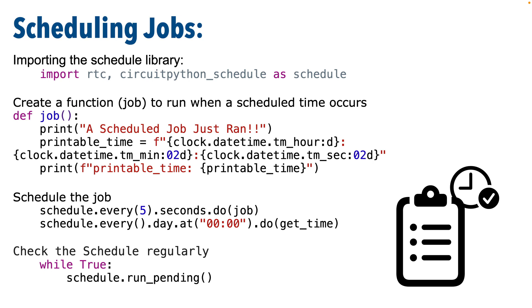Now that we have our Pico W with an internally set clock, let's schedule some jobs or functions to run at specific times. We'll import the library circuitpython_schedule as schedule. This library is not part of the Adafruit CircuitPython library bundle — it's in the community bundle, which contains additional libraries created and supported by the CircuitPython open source community outside of Adafruit. I'll show you where to find and install the library before we code things up.